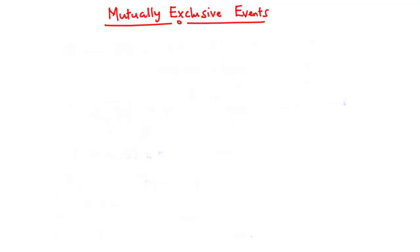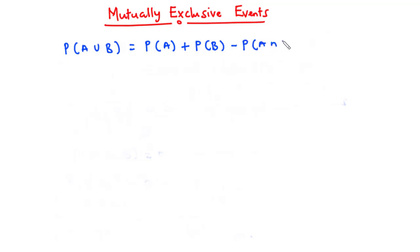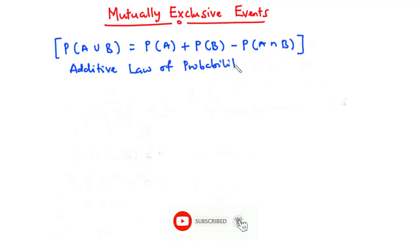In today's video we are going to look at mutually exclusive events. If A and B are two events of the same experiment, then the probability of A or B or both occurring — represented by P(A∪B) — is given by P(A) plus P(B) minus P(A∩B). This is called the additive law of probability.